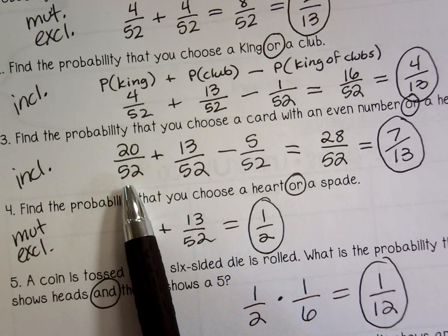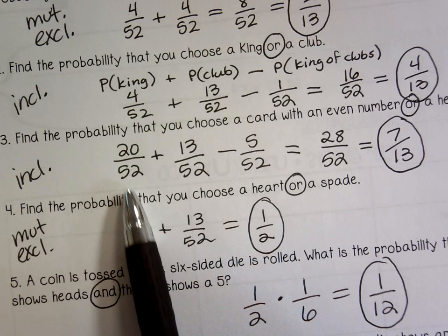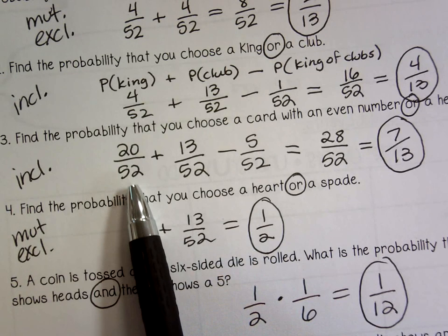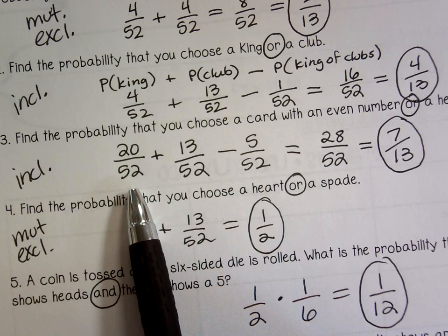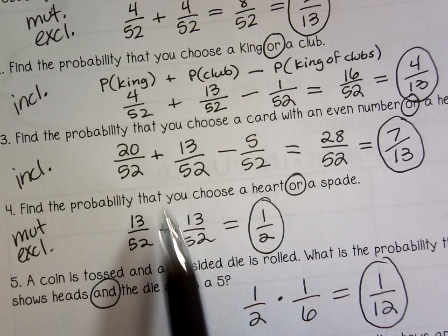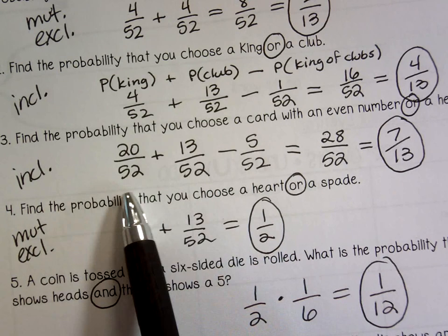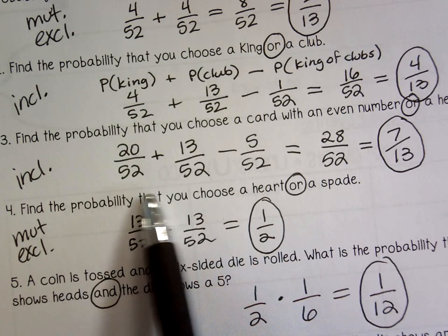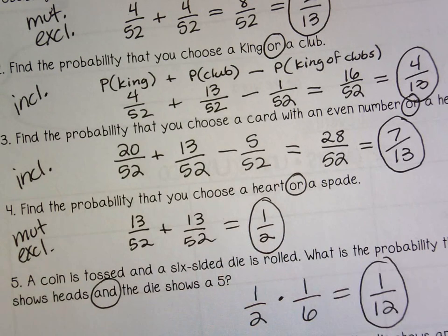For some reason I put 26 — I don't know why. I think somebody was thinking even and odd is half and half, or maybe I thought it, but I feel like somebody just blurted something and I just wrote it, which I apologize for. So this is what number 3 should actually look like.